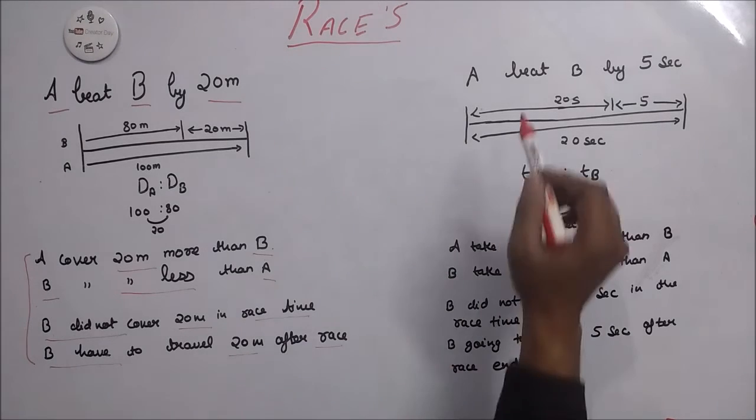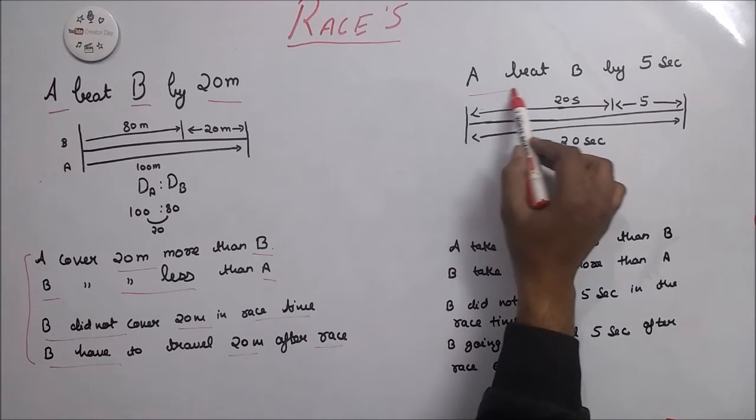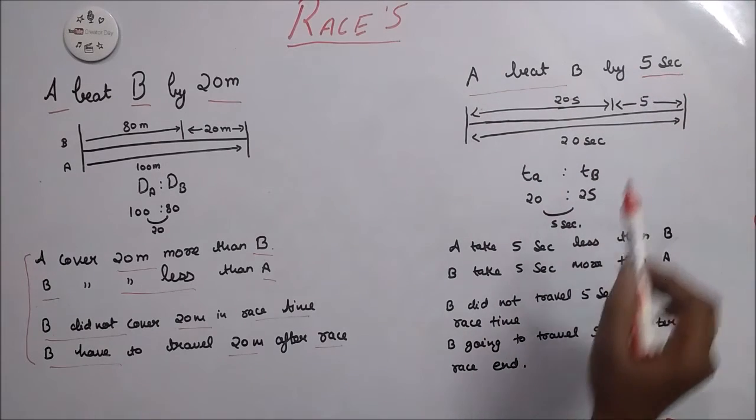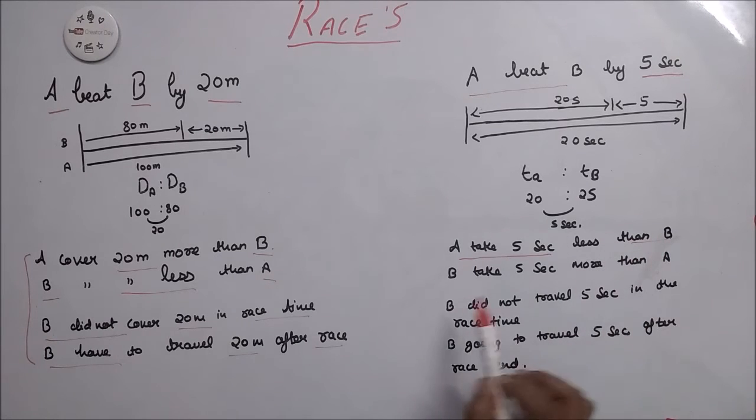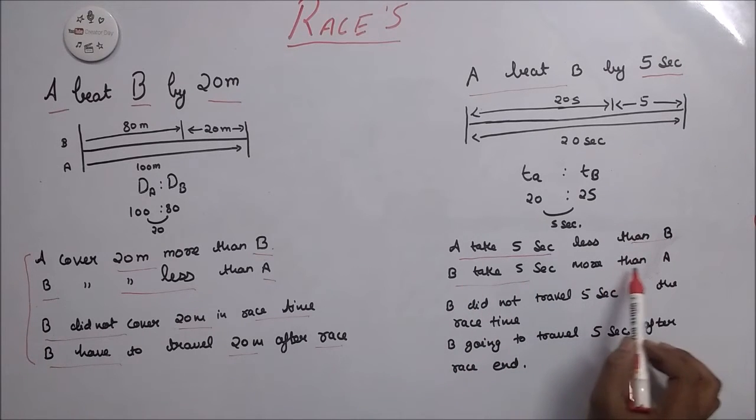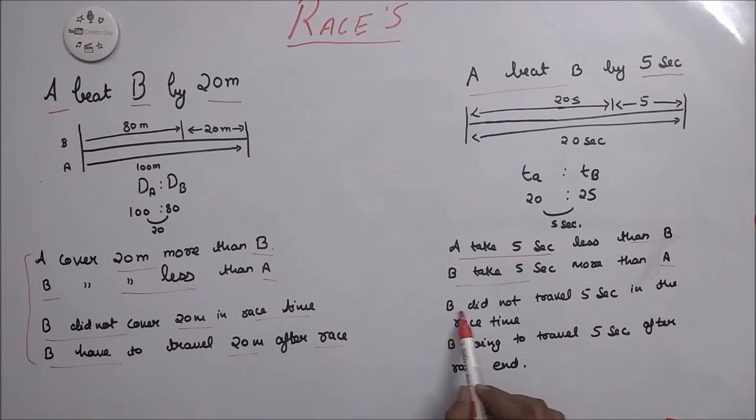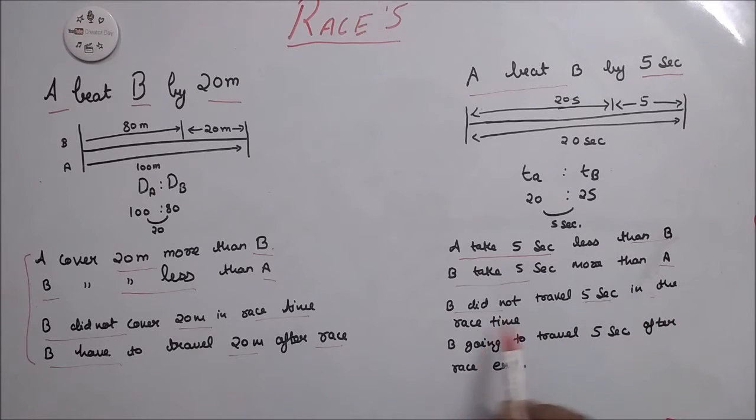And here the condition given is A beat B by 5 seconds. It means A takes 5 seconds less than B. B takes 5 seconds more than A. B did not travel 5 seconds in race time. And B is going to travel 5 seconds after the race ends.